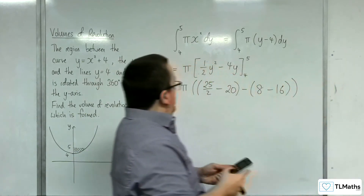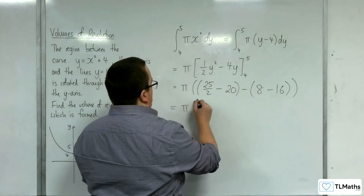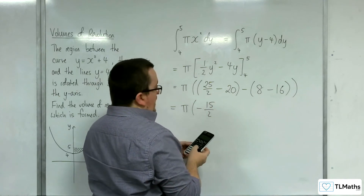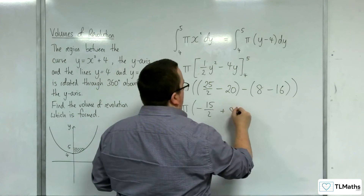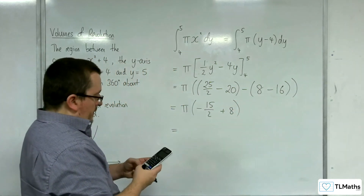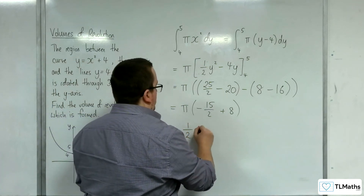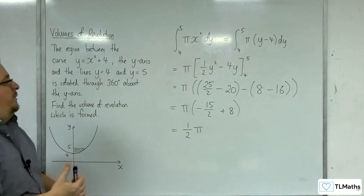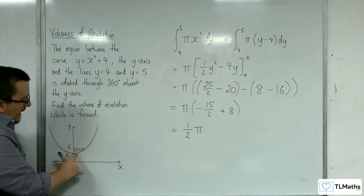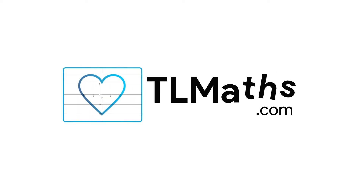So we've got 25 halves take away 20, which is minus 15 halves. And then take away 8 take away 16, so plus 8. So minus 15 halves plus 8 gets us one half, so it's one half pi, or pi over 2. And so that is the exact volume formed when that area is rotated about the y-axis.